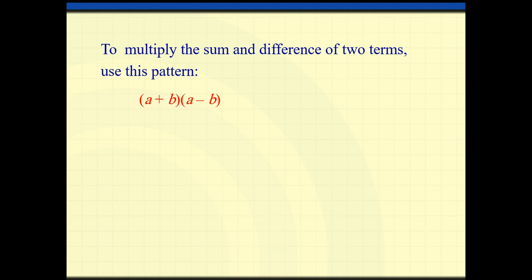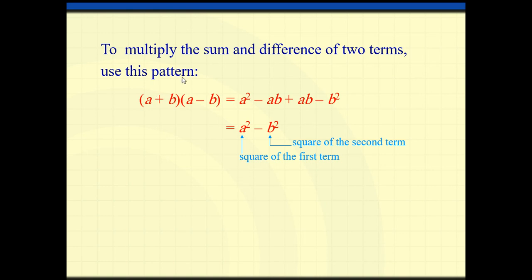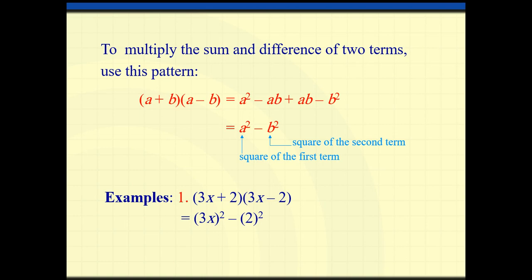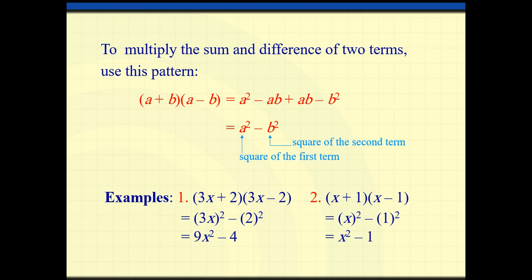To multiply the sum and difference of two terms, use the pattern: (a+b)(a−b) = a² − b². We saw this when rationalizing denominators using conjugates. Example: 3x plus 2 times 3x minus 2 equals (3x)² minus 2², which is 9x² minus 4. Another example: (x+1)(x−1) equals x² minus 1. It's really important to memorize these identities because we need them in part 2 of this chapter.